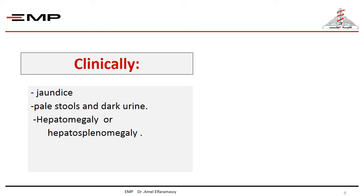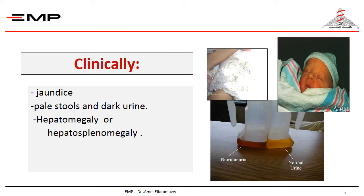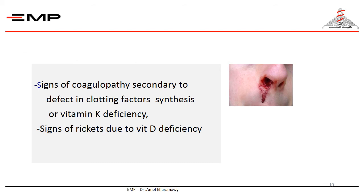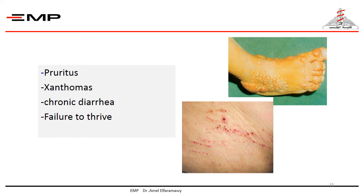Clinically, in all causes of cholestasis, the patient will present with jaundice, pale stool, and dark urine as seen in the image, along with hepatomegaly or hepatosplenomegaly depending on the etiology. Fat-soluble vitamin deficiency due to fat malabsorption will cause coagulopathy secondary to defects in vitamin K-dependent clotting factor synthesis. It may lead to intracranial hemorrhage and signs of rickets due to vitamin D deficiency. There will also be pruritus due to retention of bile acids and bile salts, xanthomas due to hypercholesterolemia, and fat malabsorption leading to chronic diarrhea and failure to thrive.